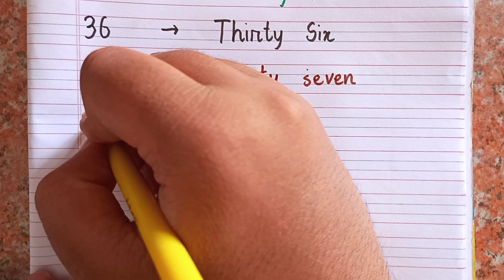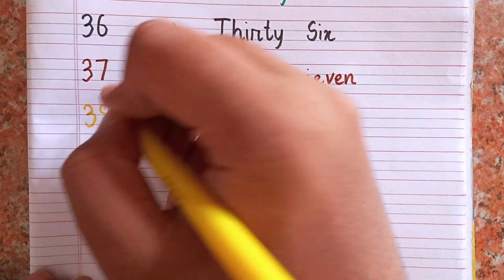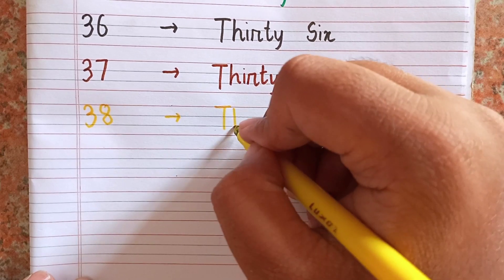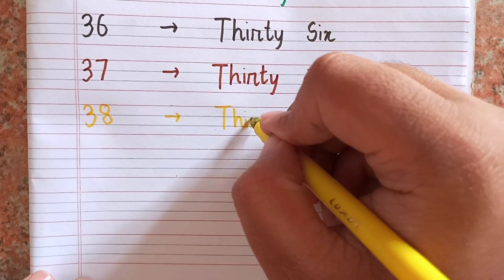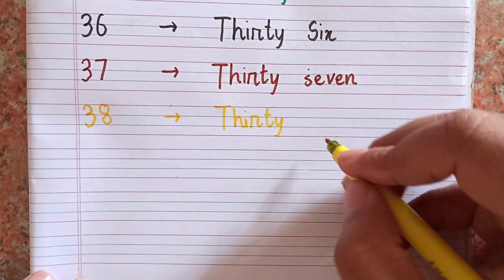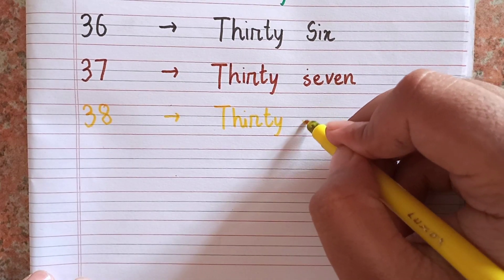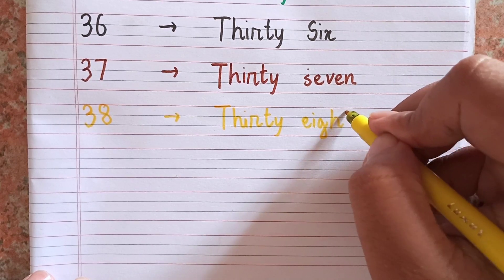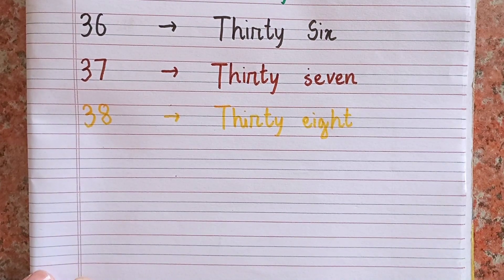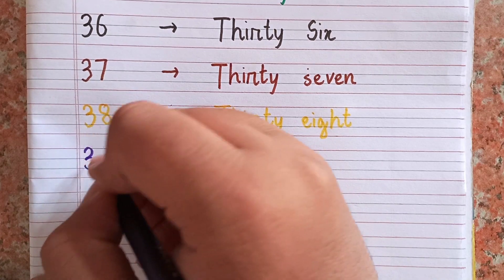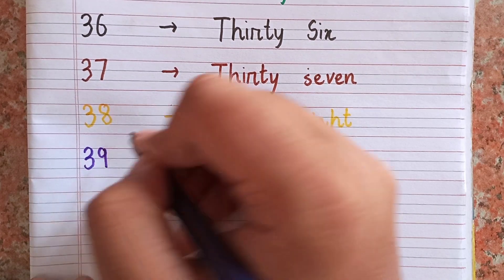After thirty-seven, the next number is thirty-eight — 3-8. After thirty-eight, the next number is thirty-nine — 3-9. 39.